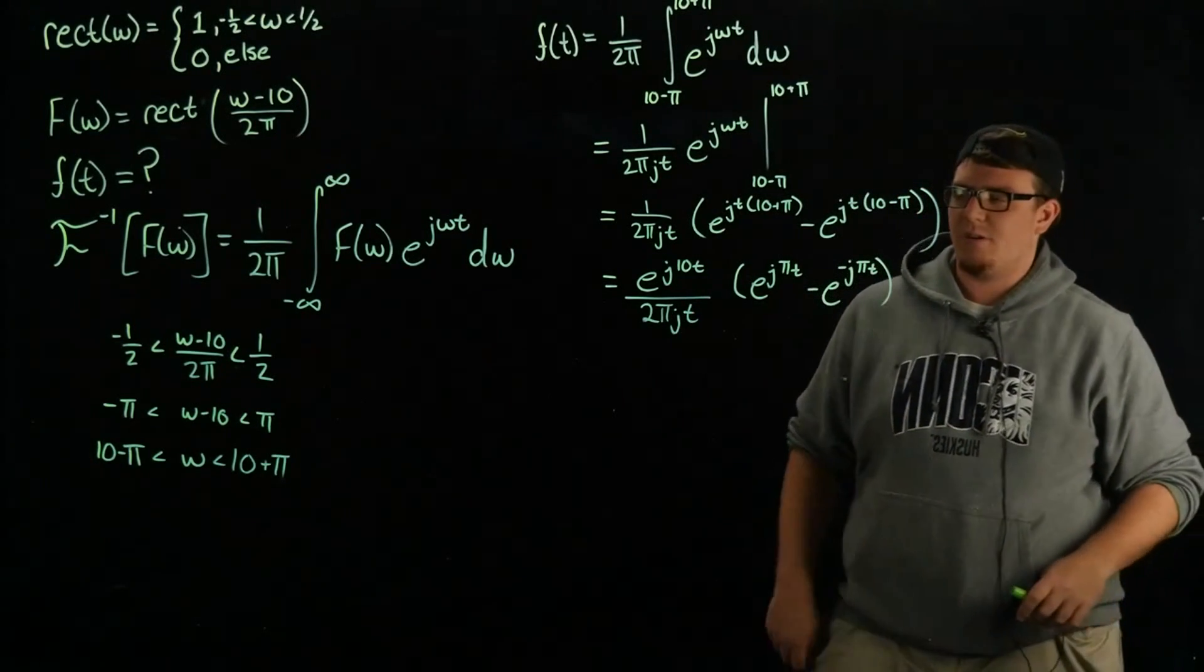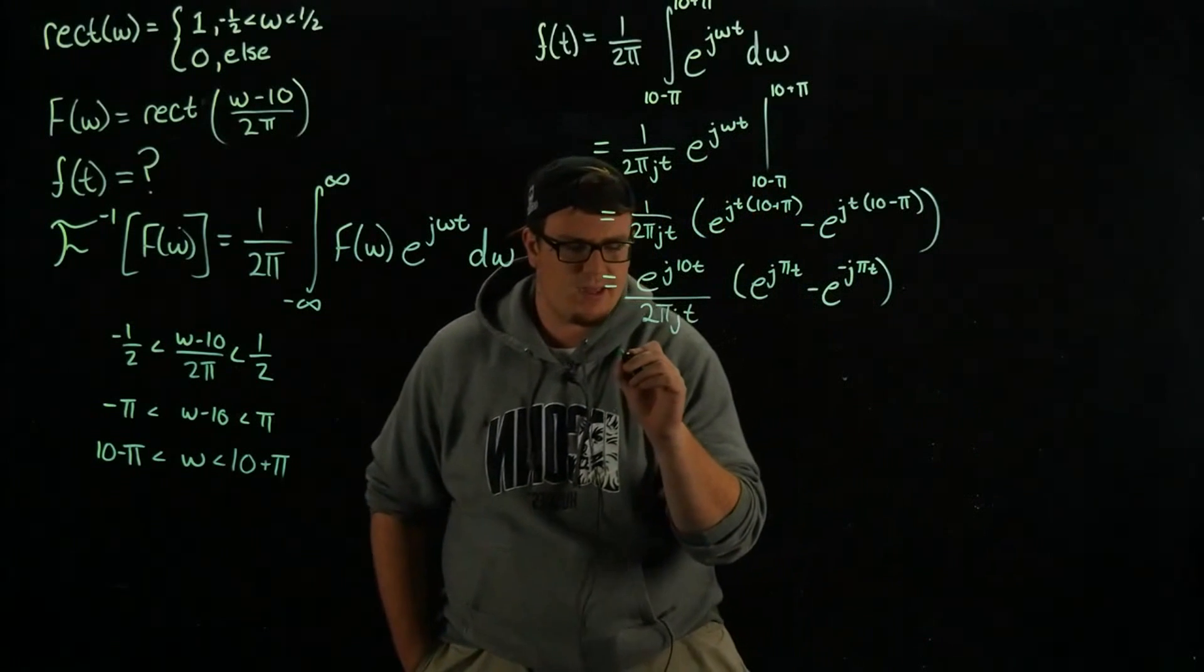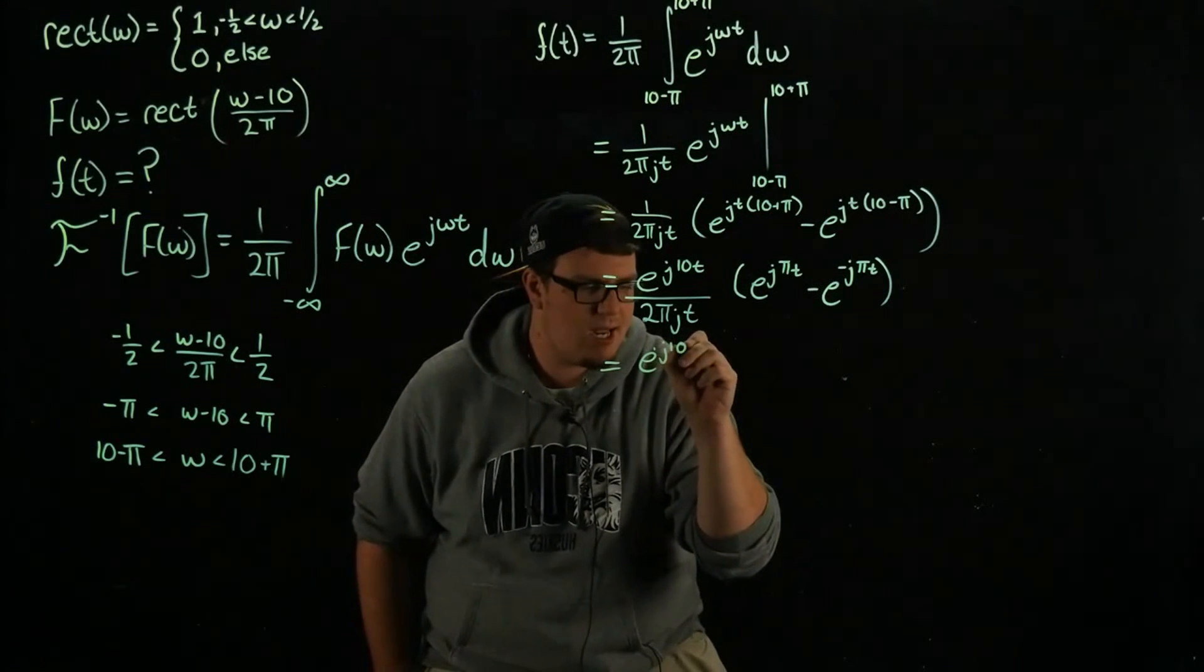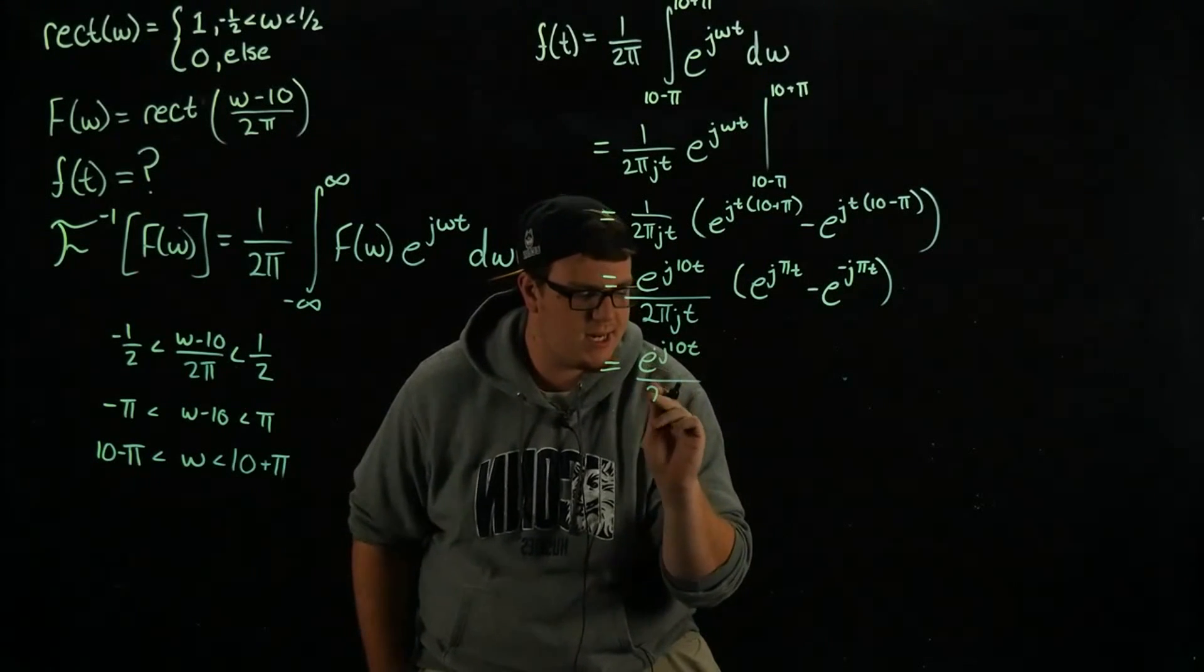We should be able to just utilize that and instead make this e to the j 10 t over pi t.